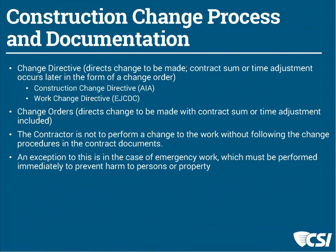In North Carolina, the contractor is not to perform a change of work without following the change procedures in the contract documents. There are exceptions if there's an emergency — personal harm or property harm that is foreseen or might be inevitable. Our formal documents say the contractor can't make a change without a written directive or agreed-upon change order. But it happens without that being done all the time. It's not supposed to, but it happens — even with state agencies who produced the documents saying you can't do that.